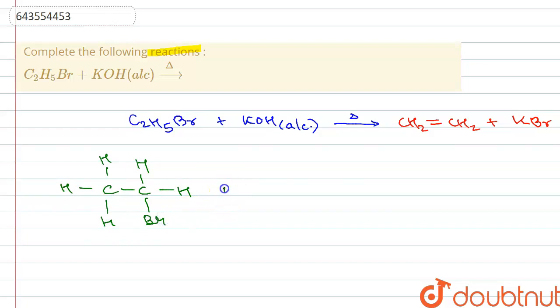Then we have potassium hydroxide which acts as a base. Because of which when it reacts, this hydrogen donates its electron pair to carbon-carbon bond and bromine gets eliminated from here. Because when this bond breaks, there is a formation of K+ and OH- ion.